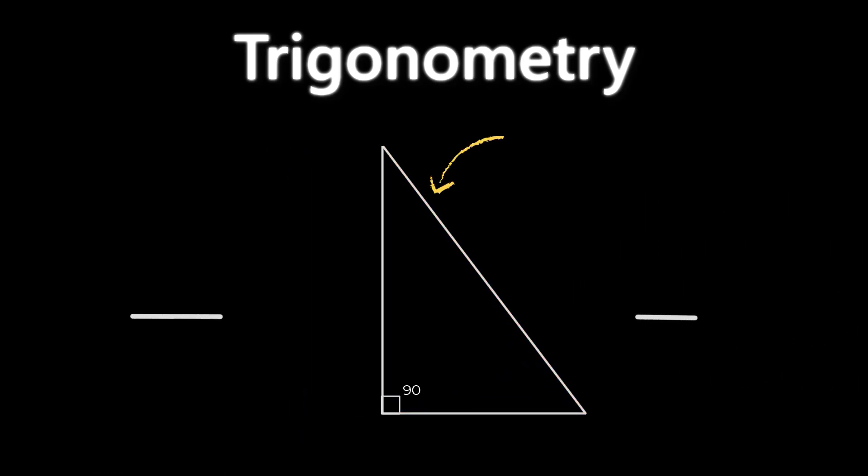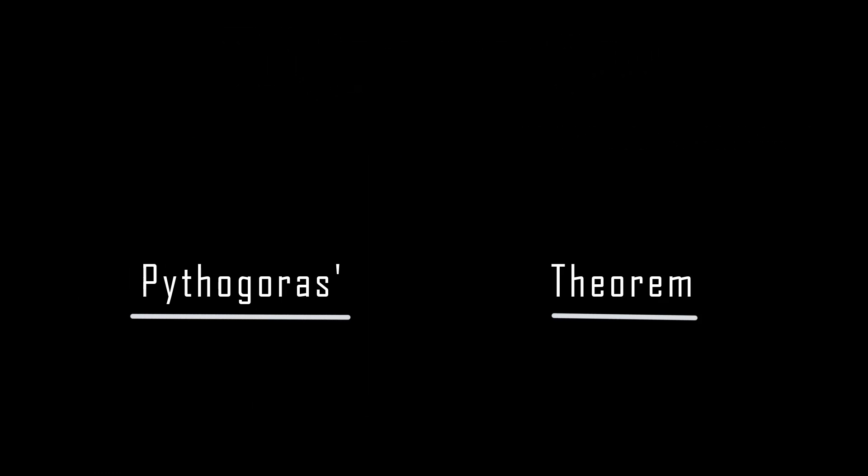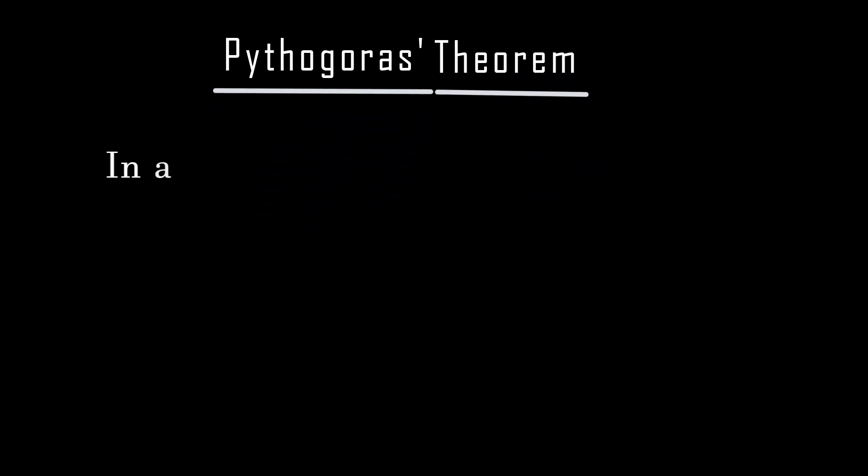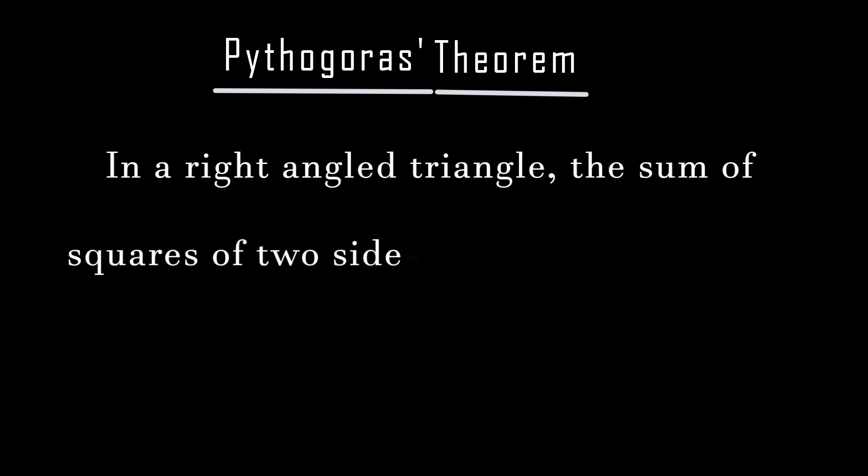Before we get into the basics of Trigonometry, let us get the concepts of Pythagoras theorem clear. Pythagoras theorem states that in a right-angle triangle, the sum of squares of two sides of a triangle is equal to the square of the hypotenuse.